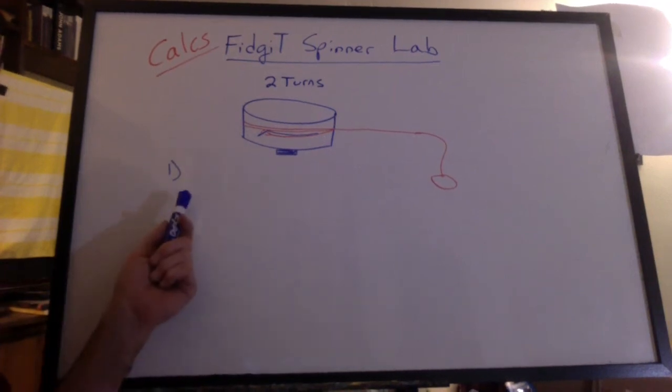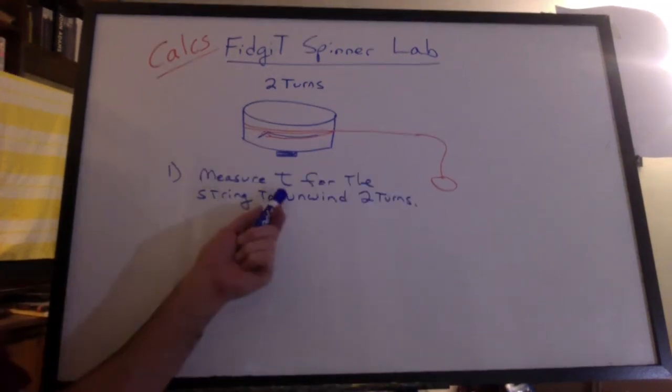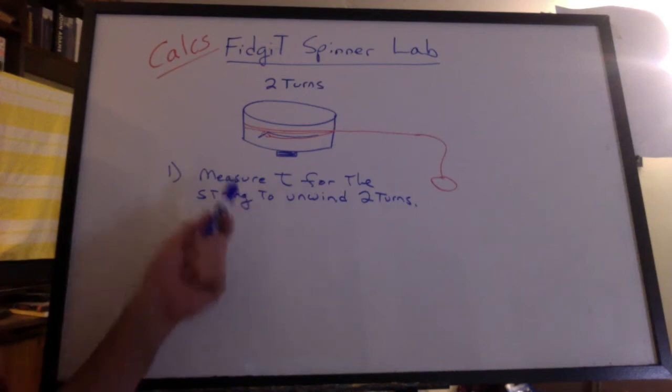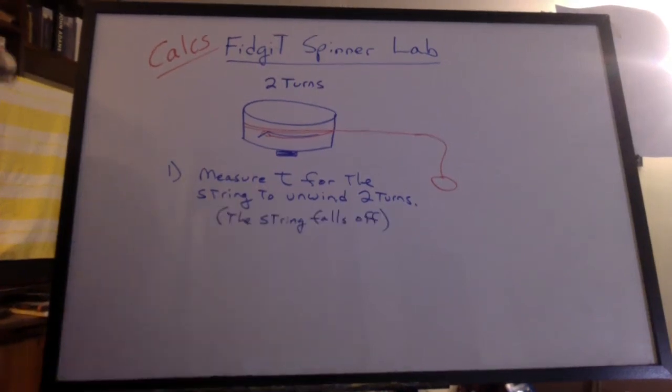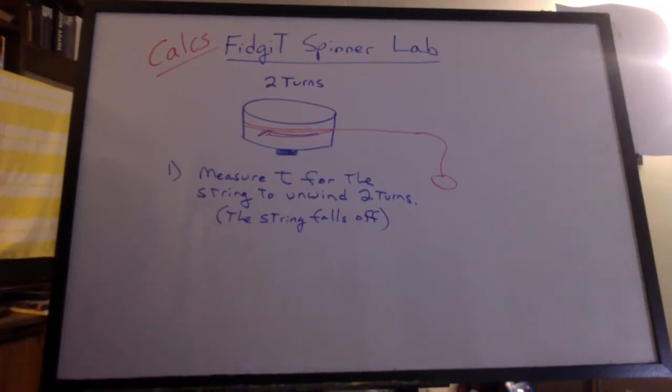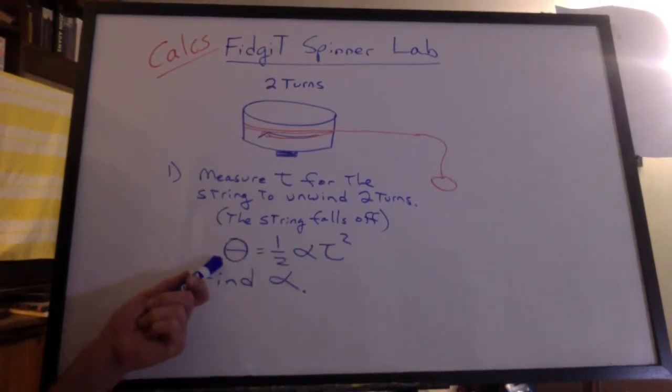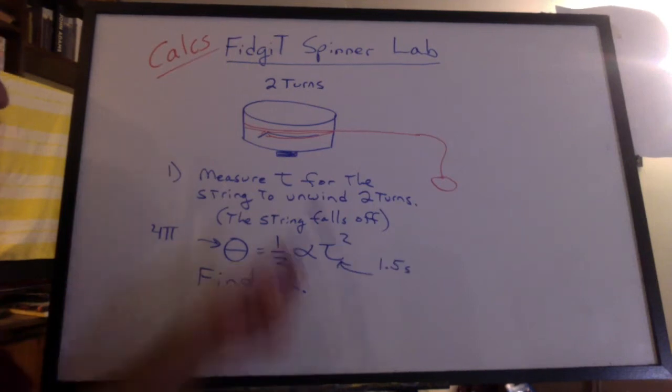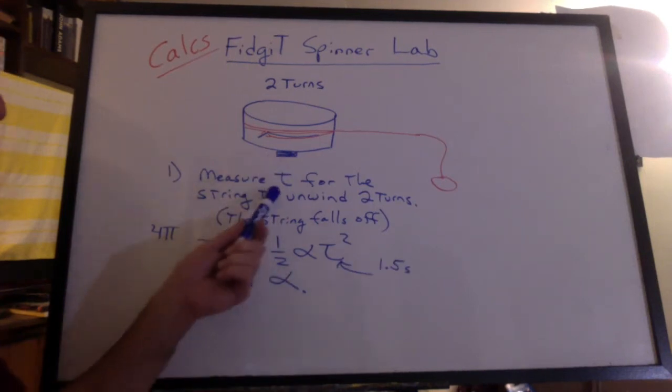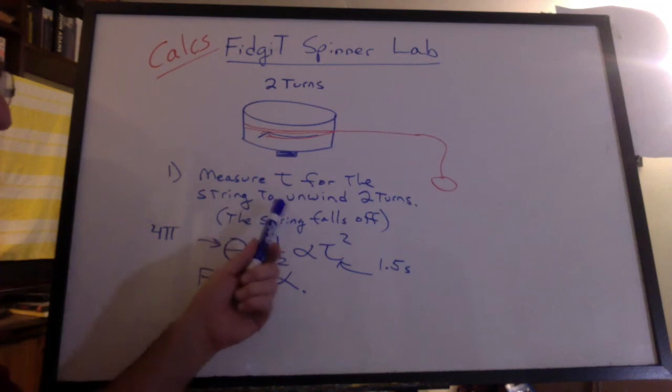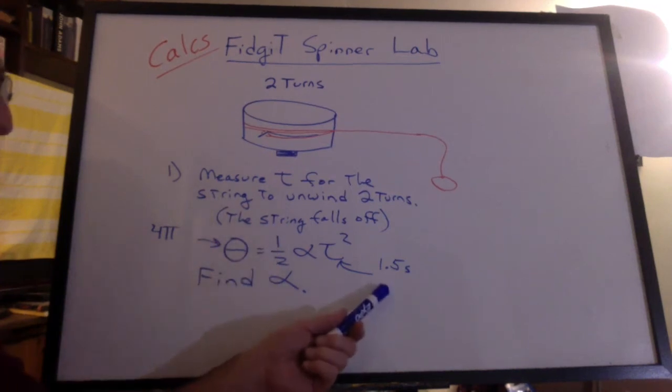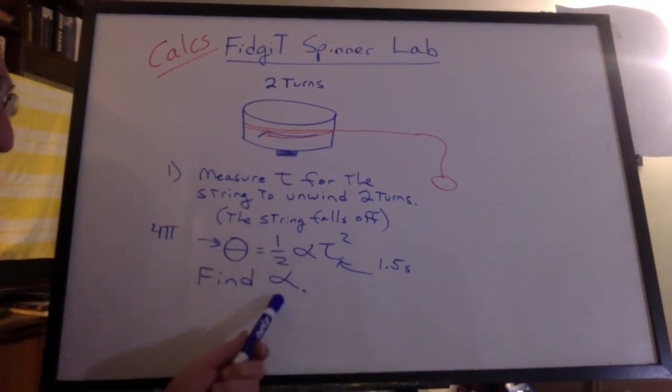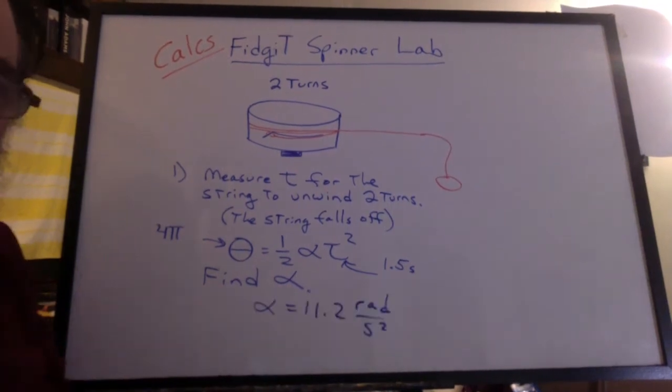So in the first part, what do you do? You measure the time for the string to unwind the two turns. At that point, the string falls off. You can use theta equals one half alpha t squared to find alpha. You know that's going to be 4 pi radians. You watch the video frame by frame and you get that time while it's accelerating. I'm going to make up a number of 1.5 seconds. So do the math. Calculate alpha. I get 11.2 radians per second squared.